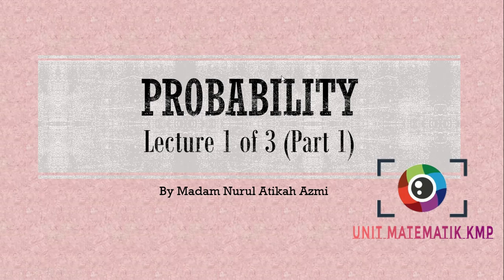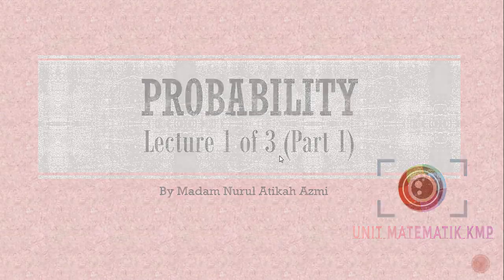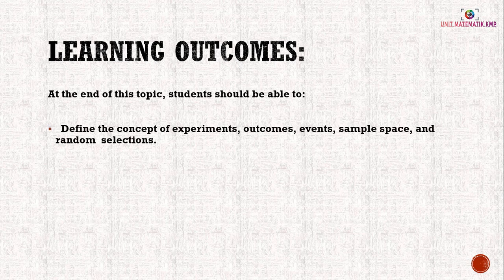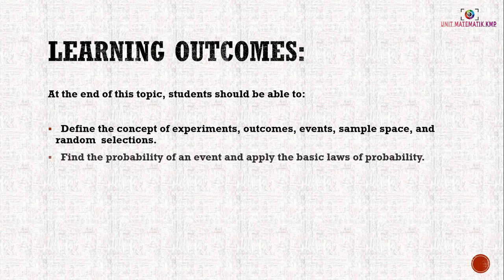Assalamualaikum and hi everyone. For today's video we are going to learn probability, lecture one of three, part one. The learning outcomes for this topic: at the end of this topic, students should be able to define the concept of experiments, outcomes, events, sample space, and random selection, and also be able to find the probability of an event.